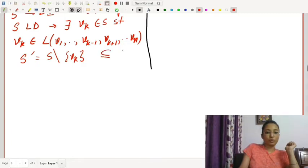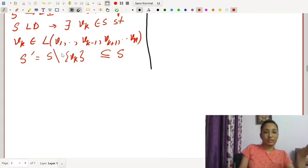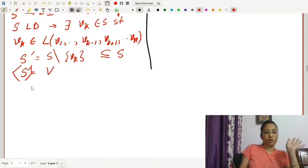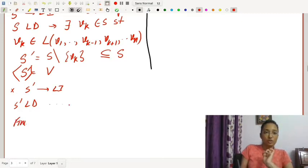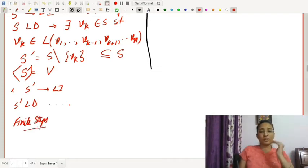S' will also generate V. If S' is linearly independent, then S' is the basis of V. If S' is linearly dependent, then continue this procedure. After finite steps, the process will stop because V is a finite dimensional vector space. After finitely many steps, we will have a basis. Basically, every spanning set can be reduced to form a basis of V.